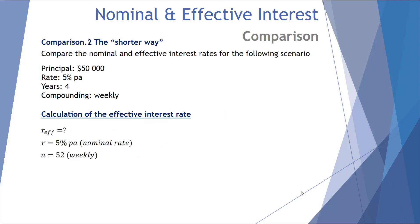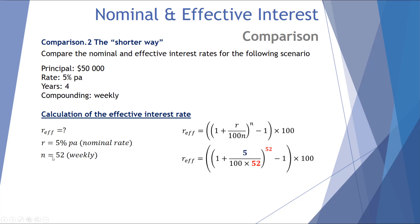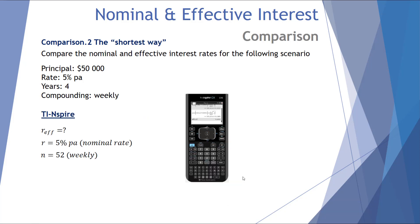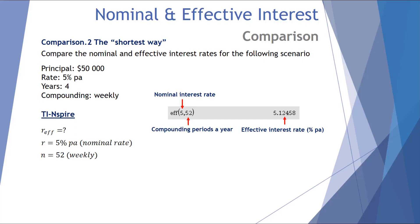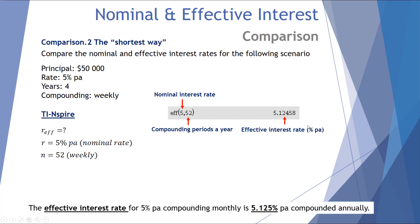Using the formula for effective interest rate, we substitute the nominal rate of 5% and N = 52 for 52 weeks in a year. That gives an effective rate of 5.12458% per annum. Using the EFF feature on the CAS calculator with a nominal of 5% and compounding periods of 52, we get the same result: 5.12458% per annum — consistent across all techniques.